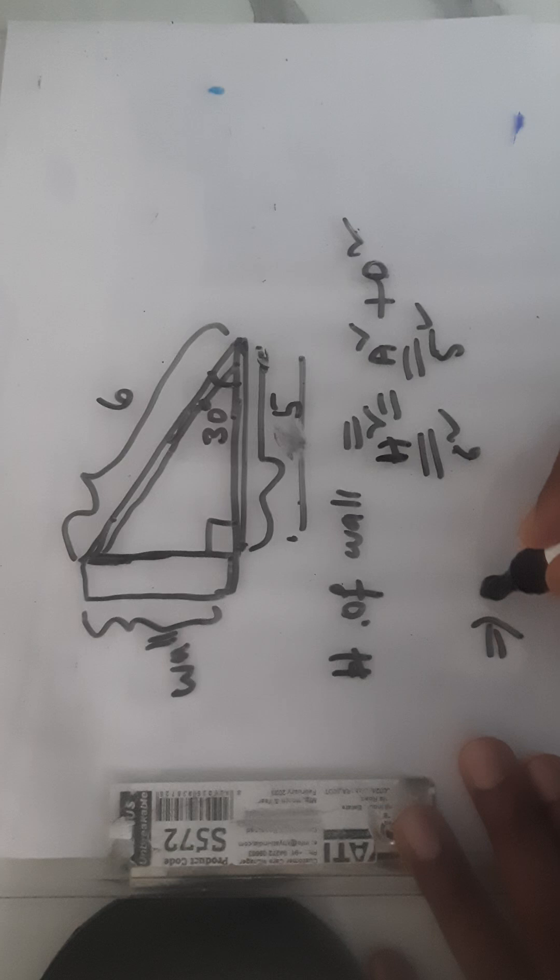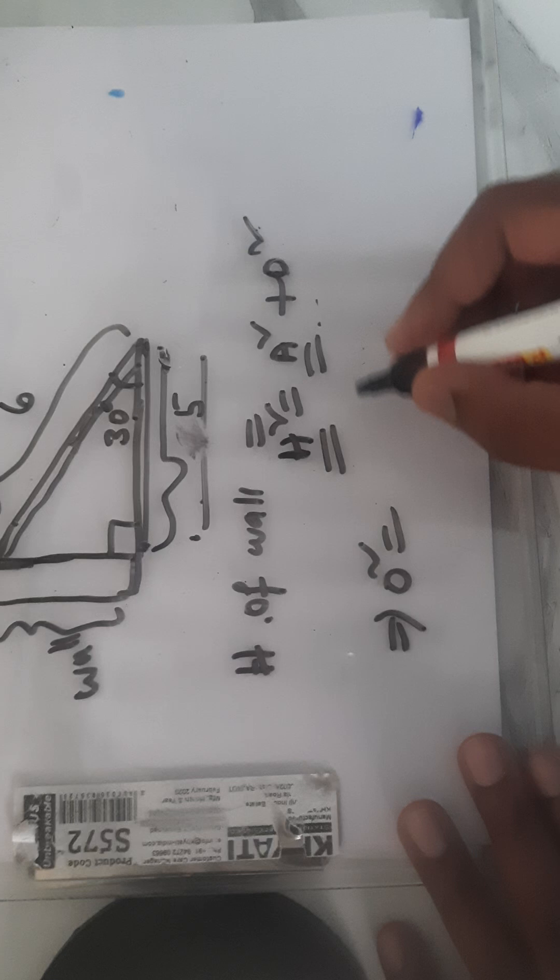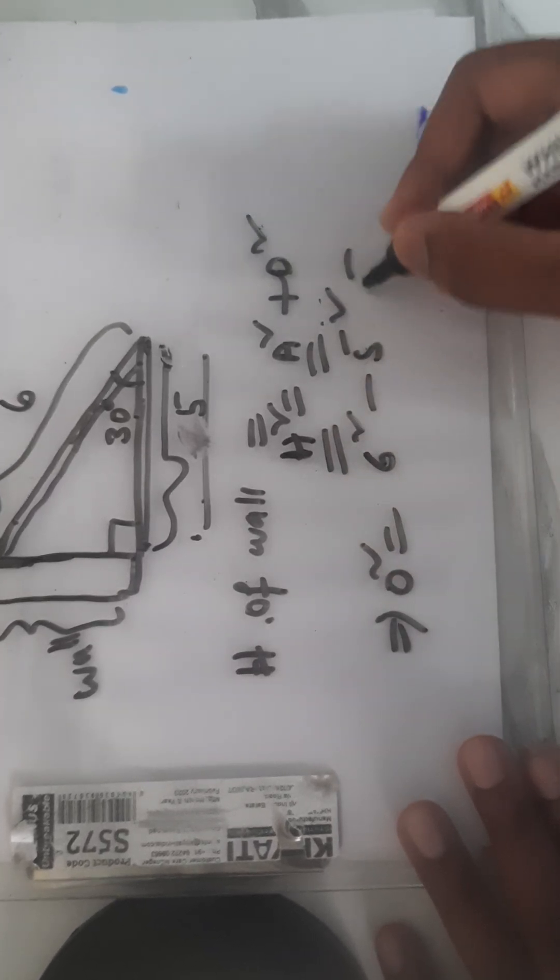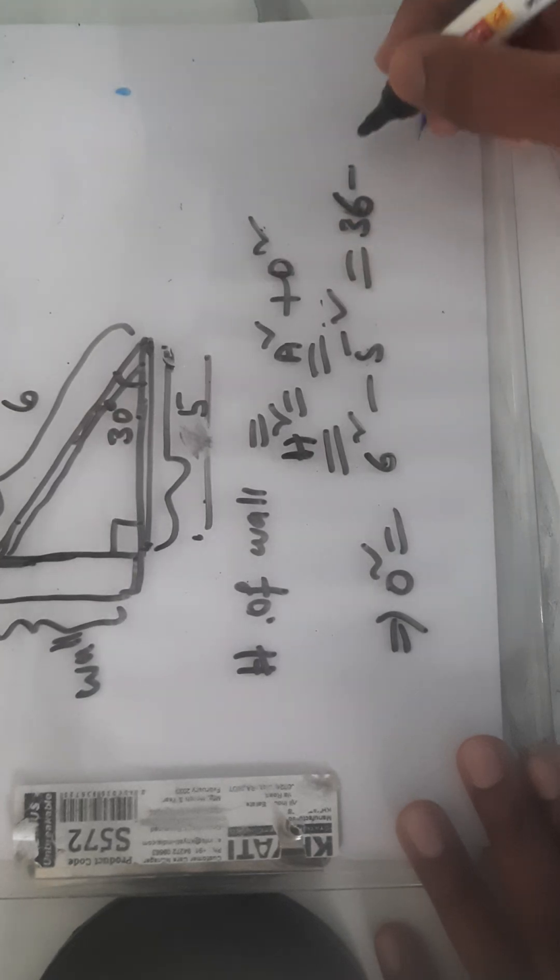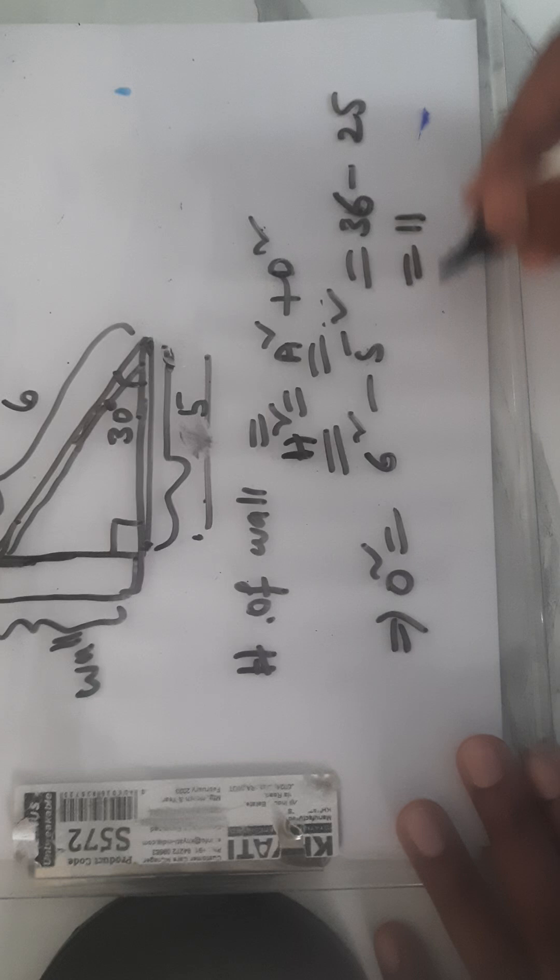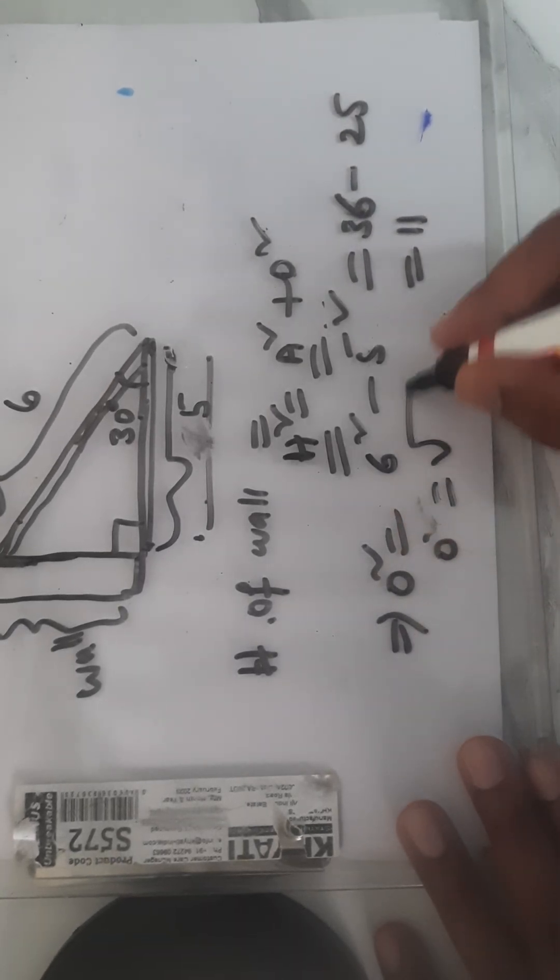So we can say o square equal to, when 5 square goes this side, o square equal to 6 square minus 5 square which is equal to 36 minus 25 which is equal to 11. So o square equal to 11, o equal to square root of 11.